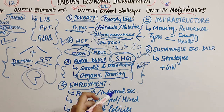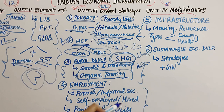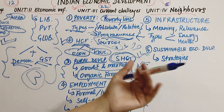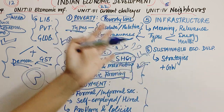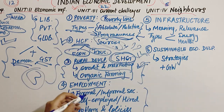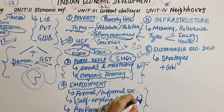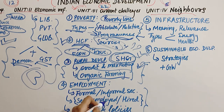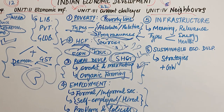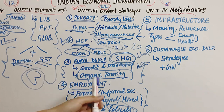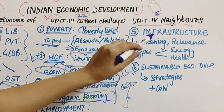The fourth chapter in Unit 3 is Employment. We will study three topics: first, formalization versus the informal sector — how informalization is happening and why; second, the difference between self-employed and hired workers; and third, the problems faced and policies for solutions. Cover these three topics and we'll be done with this chapter.